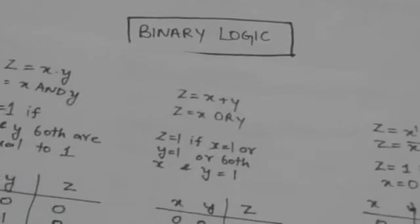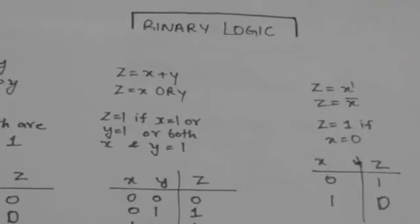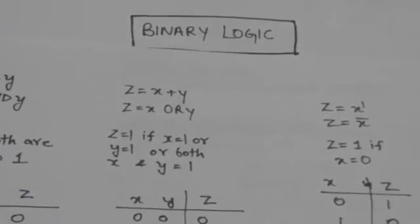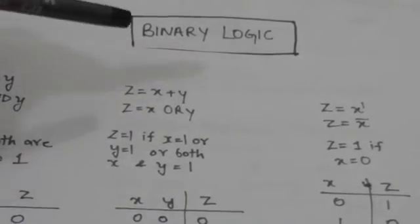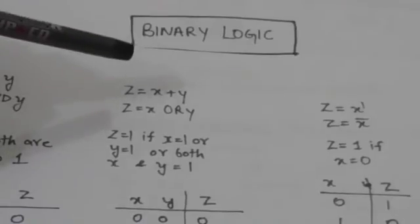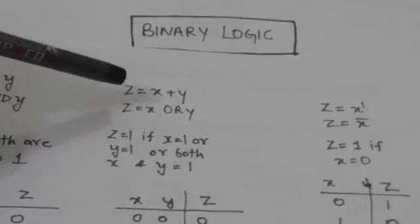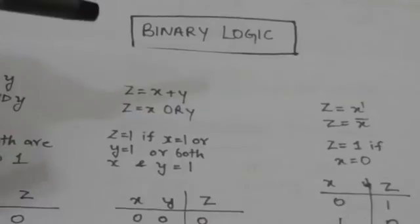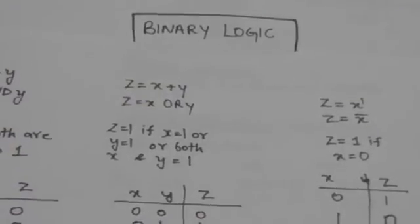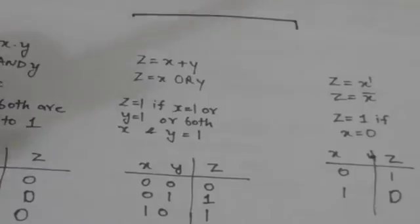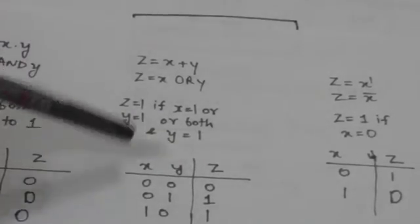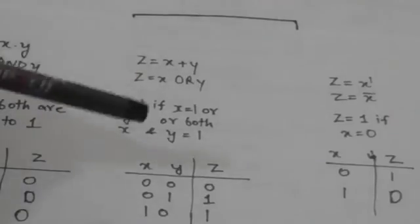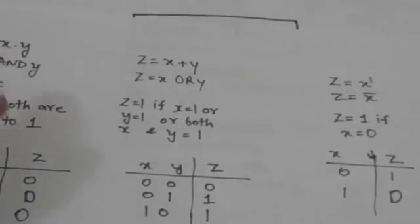The second logical operation is the OR operation. It is denoted by the plus operator, and z is a binary variable. So z equals to x OR y. The value of z is 1 if x equals 1, or if y equals 1, or if both x and y equal 1.